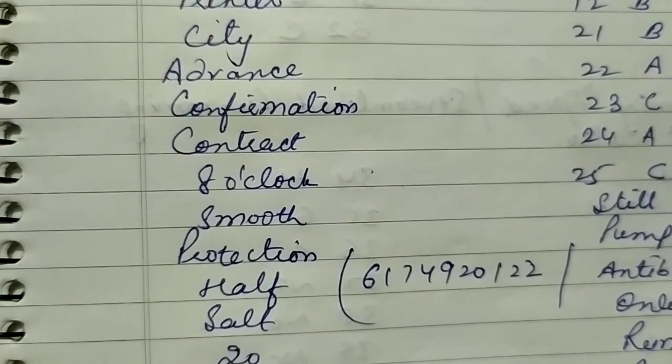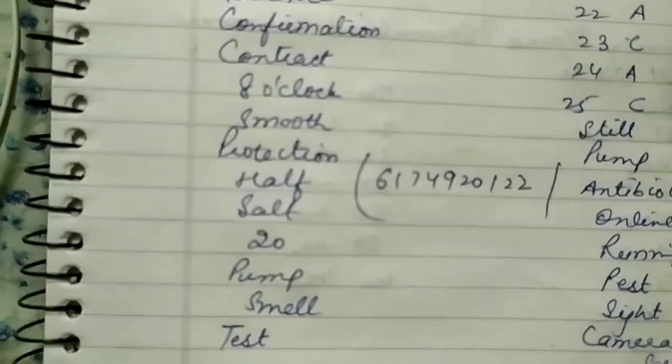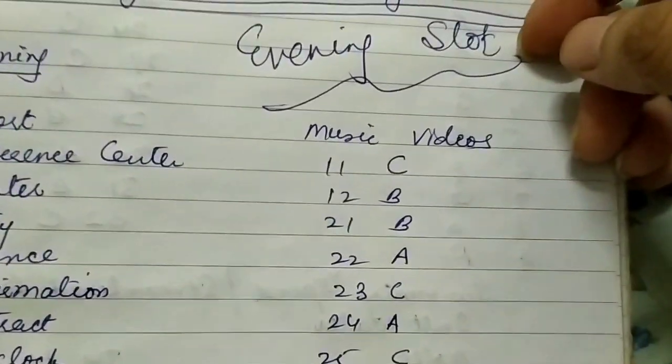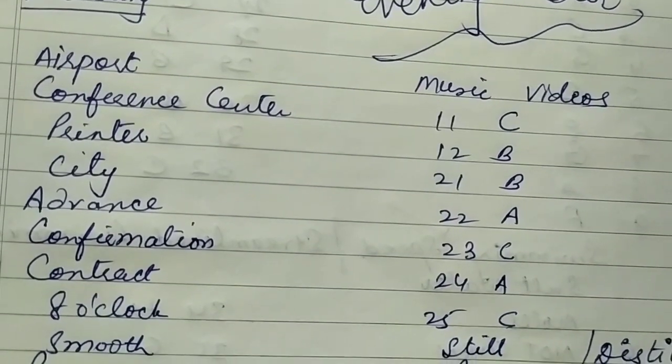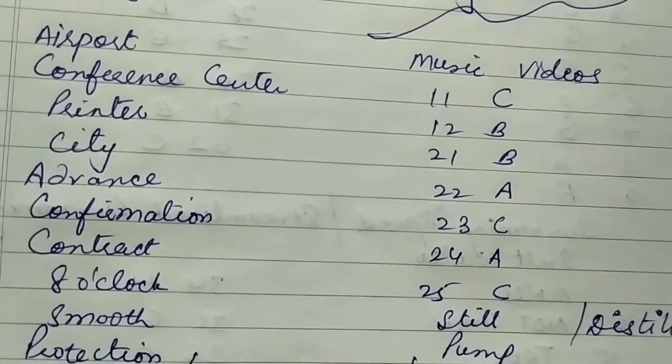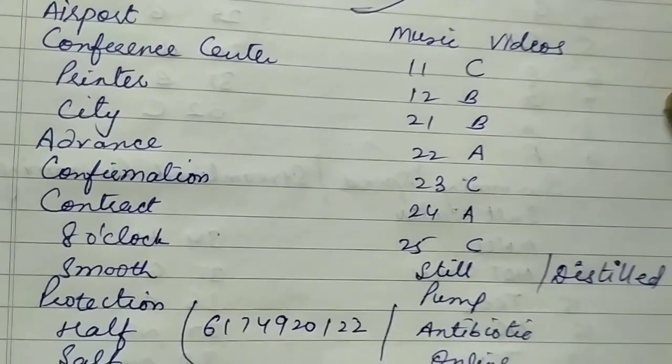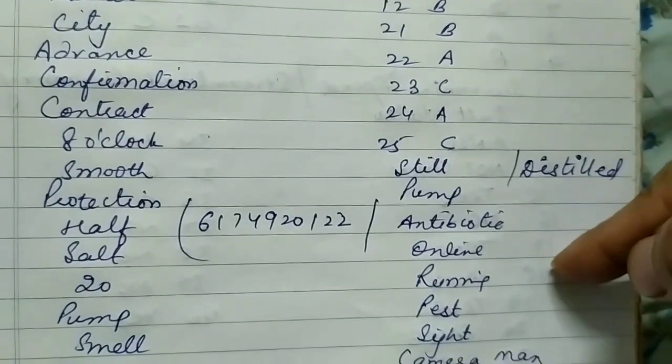6174920122, salt, 20 pump, smell, and test. Aage music videos hai. 11, 12 C and B, then 21 is B, 22 is A, 23 is C, 24 is A, 25 is C. Then ake distilled, then pump, antibiotic, online, running.